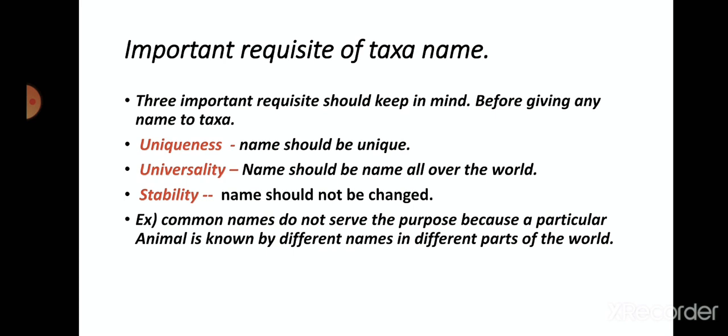Common names do not serve the purpose because a particular animal is known by different names in different parts of the world. For example, the bird known as 'goraya' in India or Pakistan is known as 'house sparrow' in England, 'paddle' in Spain, 'most such' in Holland, and 'sujan' in Japan. Moreover, the same common name may be used for different animals — for example, 'kenchua' is used for both earthworm and ascaris.